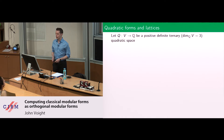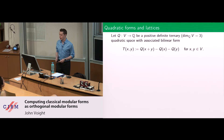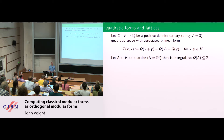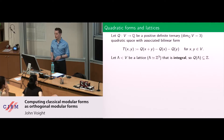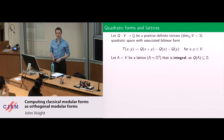Let Q from V to the rational numbers be a positive definite ternary quadratic space — the ternary here is just the dimension of V as a Q vector space. I associate the bilinear form T(x,y) defined in this way. I don't divide by two. I'm going to work with lattices. A lattice inside V is a free Z-module of rank three that contains a basis for the vector space — the Z-span of a Q-vector-space basis for V.